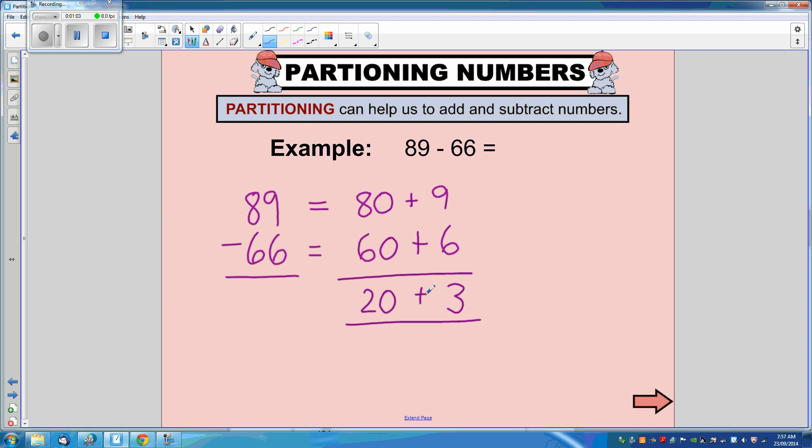So we need to add 20 and 3 to get our answer. The answer to 89 take away 66 equals 23.